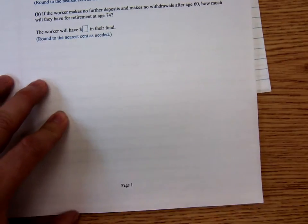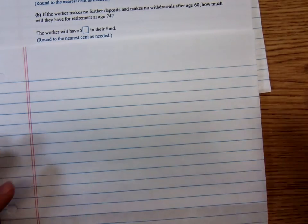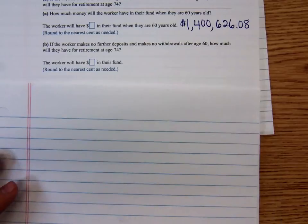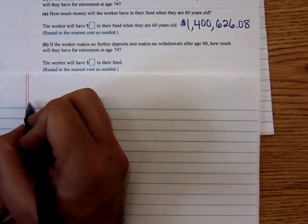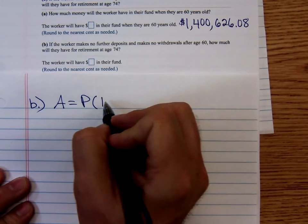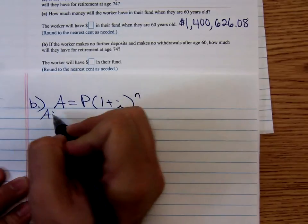At this point it's just a compound amount problem. You have to use that compound interest formula. For part B we're going to use that compound amount formula A = P(1 + i)^n, where A is the future amount.